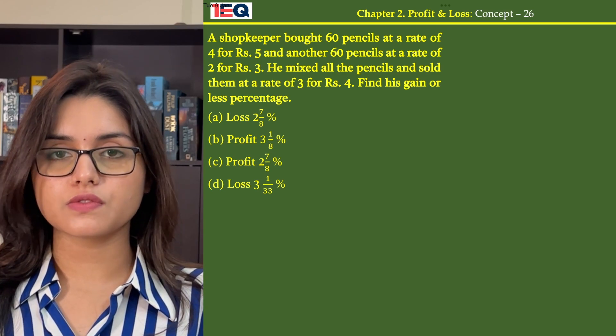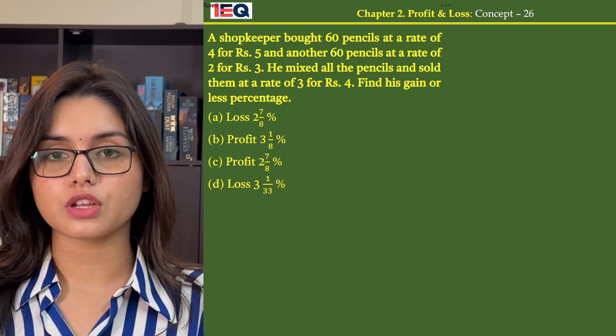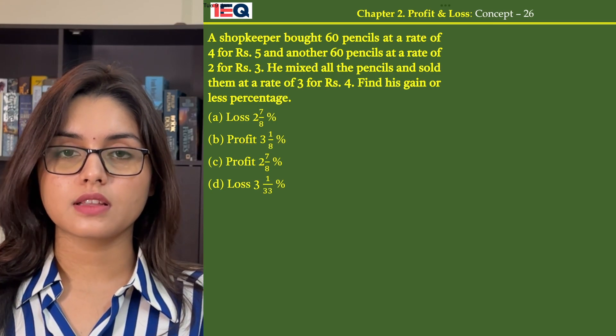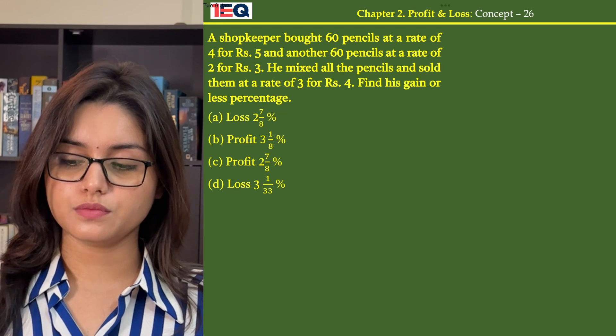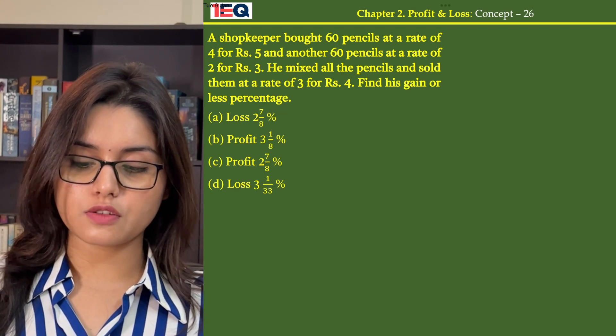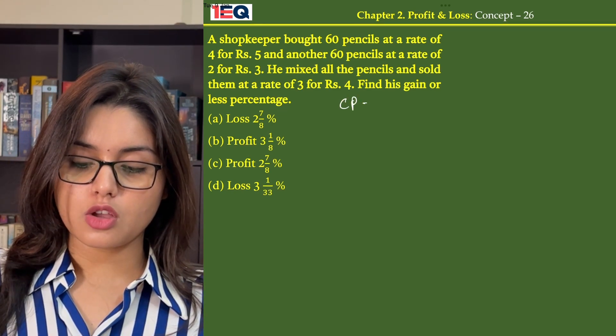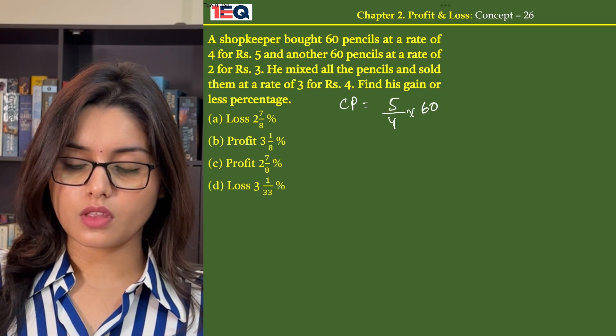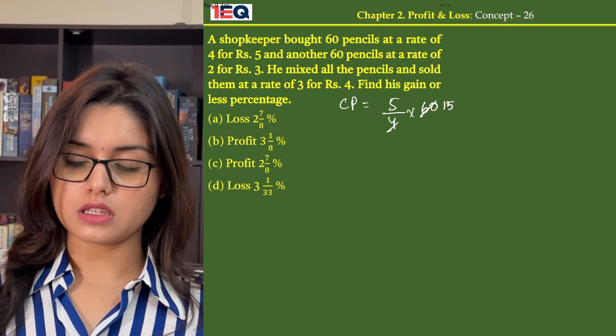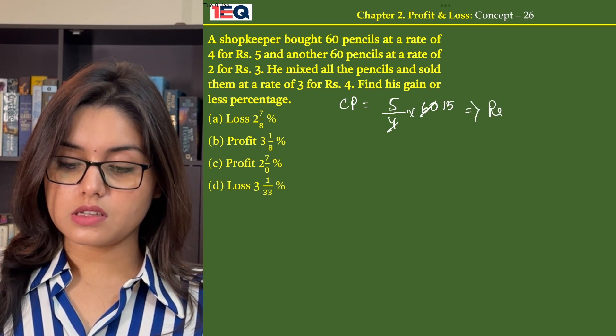In this question, we know that a shopkeeper bought 60 pencils at a rate of 4 for Rs 5. That means the cost of one pencil will be Rs 5 by 4. So the cost price of the first 60 pencils will be 5 by 4 into 60, which is Rs 75.